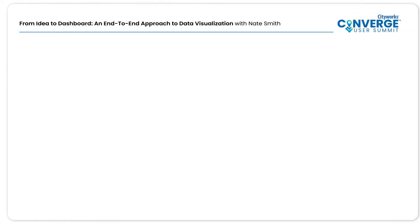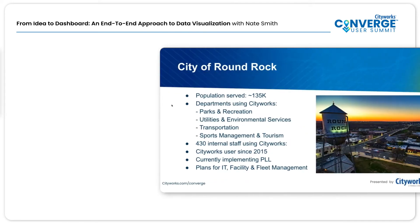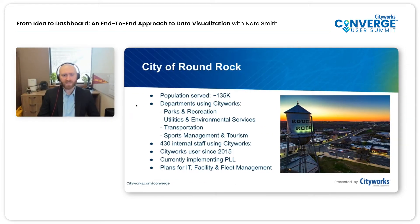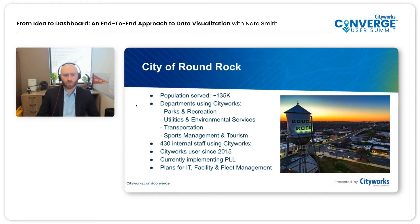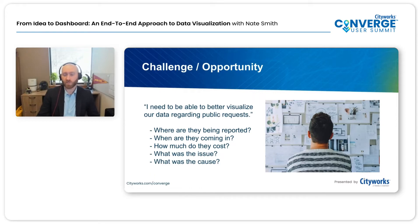I'm Nate Smith, Geospatial Services Manager from the City of Round Rock, a mid-sized city in central Texas just outside the Austin metropolitan area. We serve a population of about 135,000 and we're currently using CityWorks AMS with various departments — Parks and Rec, utilities, transportation, sports management and tourism. We have 430 internal staff members that are active users in CityWorks, and we've been using AMS since roughly 2015.